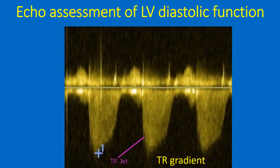Tricuspid regurgitation jet velocity and pulmonary regurgitation end-diastolic velocity indicating pulmonary hypertension are also taken as surrogates of left atrial pressure in the absence of pulmonary disease.